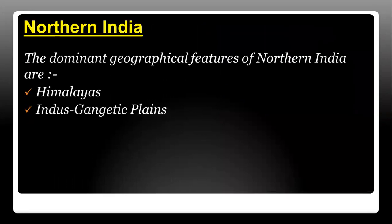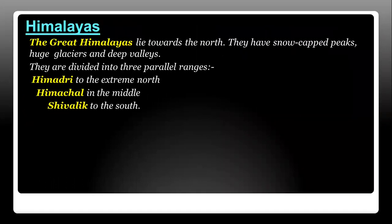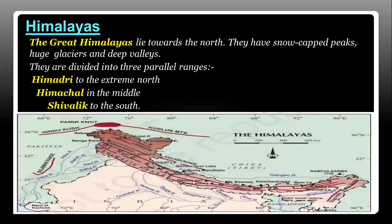The dominant geographical features of Northern India are the Himalayas and the Indus-Gangetic Plains. The great Himalayas lie towards the north. They have snow-capped peaks, huge glaciers, and deep valleys, as you can see in the picture. They are divided into three parallel ranges: Himadri to the extreme north, Himachal in the middle, and Shivalik to the south.